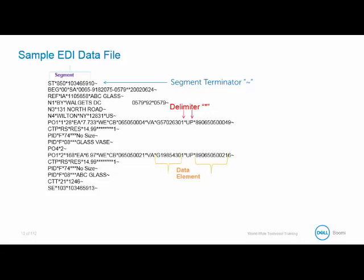The data element is the basic unit of information — it contains a set of values representing a single fact. The qualifier is a detailed data element predefined in AtomSphere to classify key data. In our example, IA is a qualifier for the REF segment. Loops are a section or group of repeating sub-segments in one document instance. Finally, the identifier instance is a flag in the EDI structure used to describe a detailed data set based on a numeric occurrence, qualifier, or both.